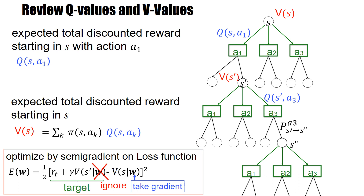For learning with V-values, we would not use the standard error function discussed before, but we would use a semi-gradient loss function that compares the V-value in state s with the V-value in state s-prime. The momentary reward r_t and V of s-prime together form the target, which should be stable. Therefore, we only take the gradient with respect to V of s given w.